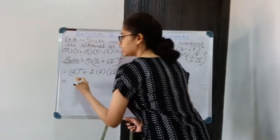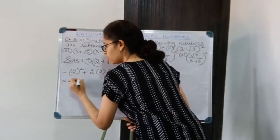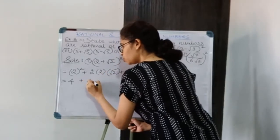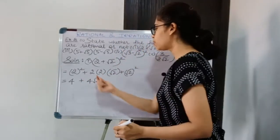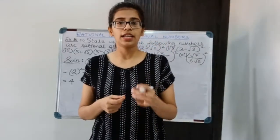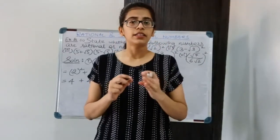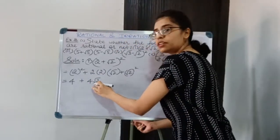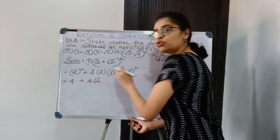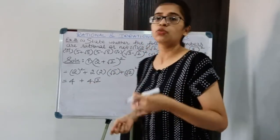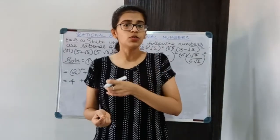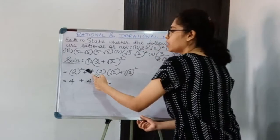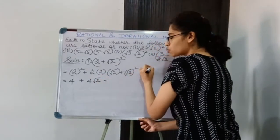In the next step, 2² becomes 4. Then 2 × 2 gives 4, so we have 4√2. Please do not take 4 and multiply it with √2 to make it √8 or anything like that — you cannot move the outside number inside the root that way. The root remains separate as 4√2. If 4 goes inside, it would become 4², so keep 4√2 separate.